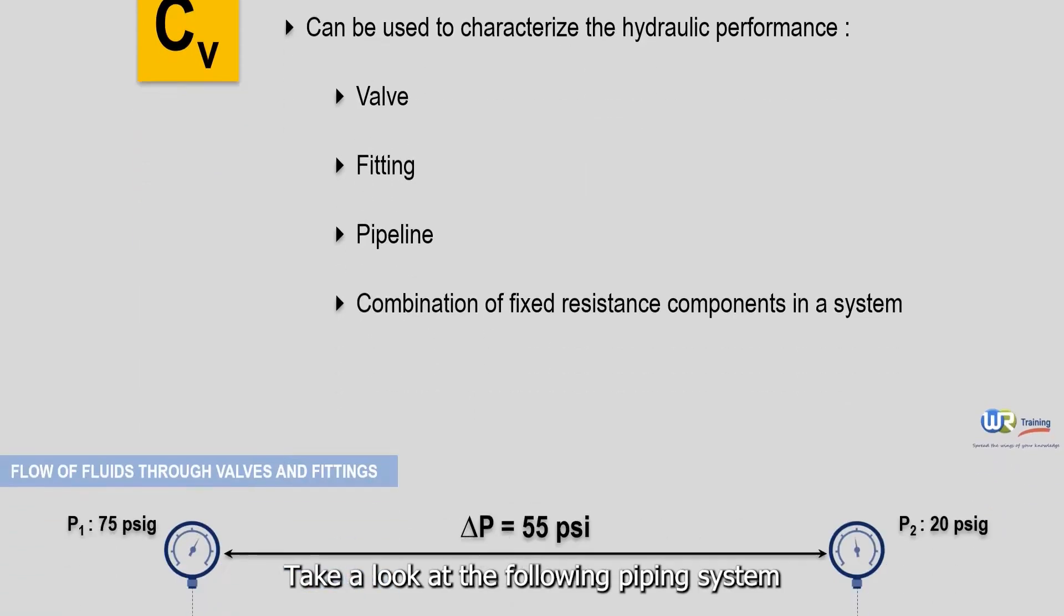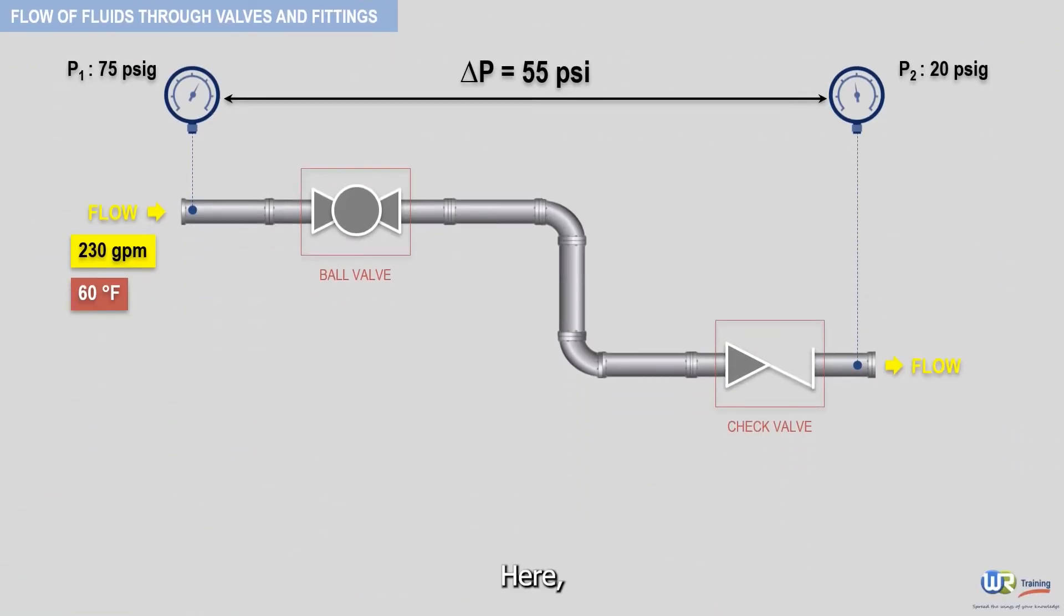Take a look at the following piping system. Here, water is flowing at 230 GPM through a ball valve and a check valve at 60 degrees Fahrenheit with a differential pressure of 55 PSI.